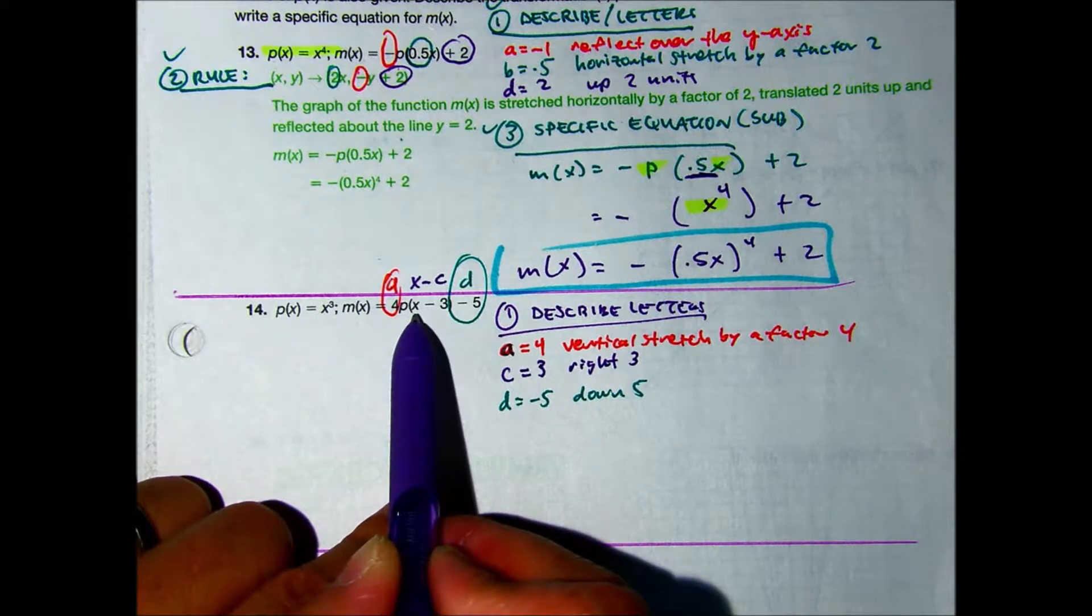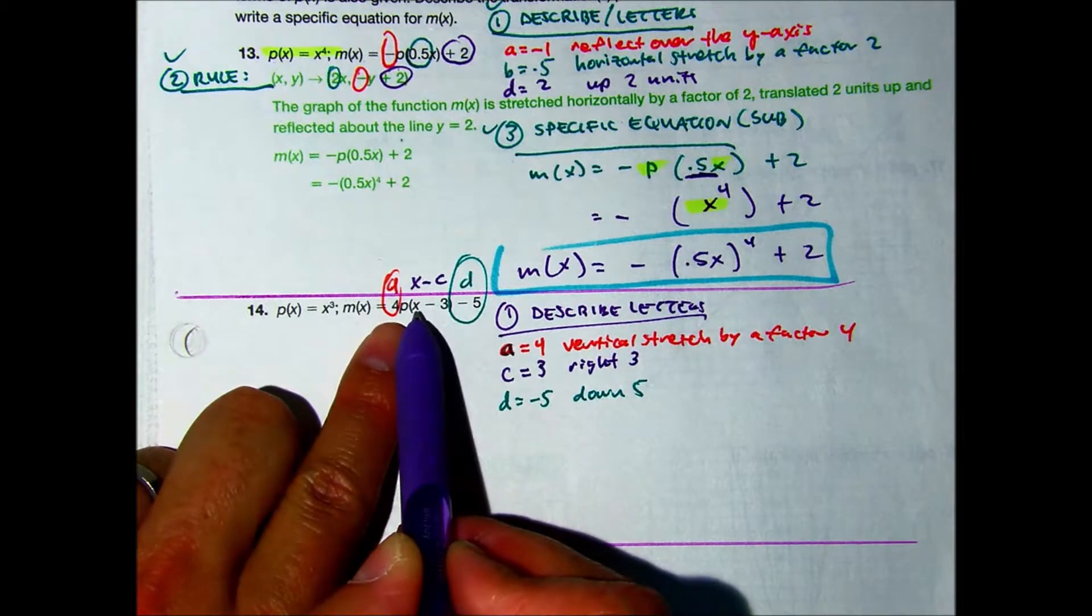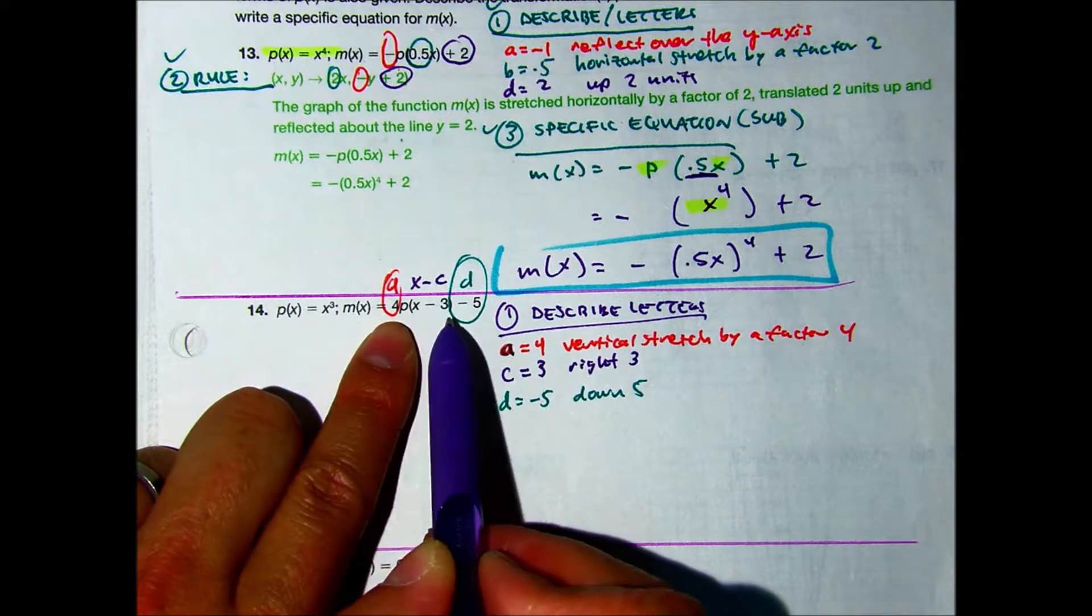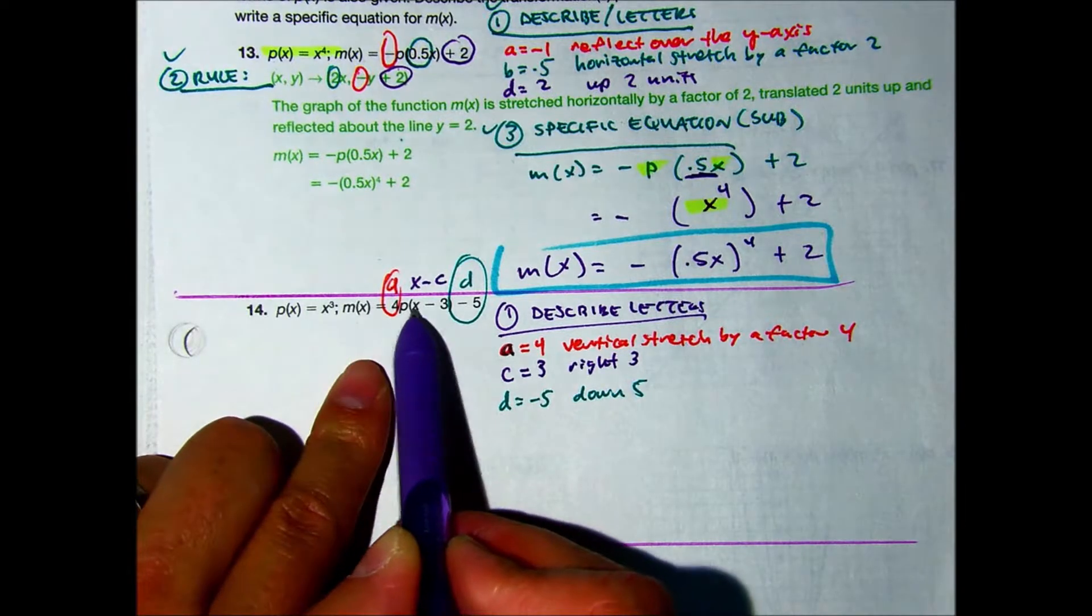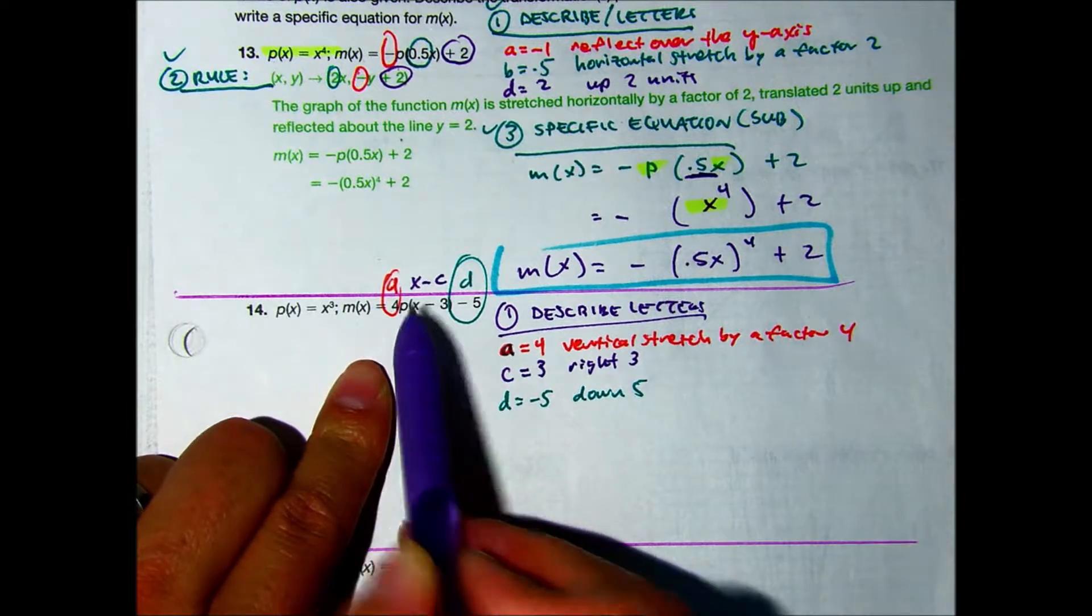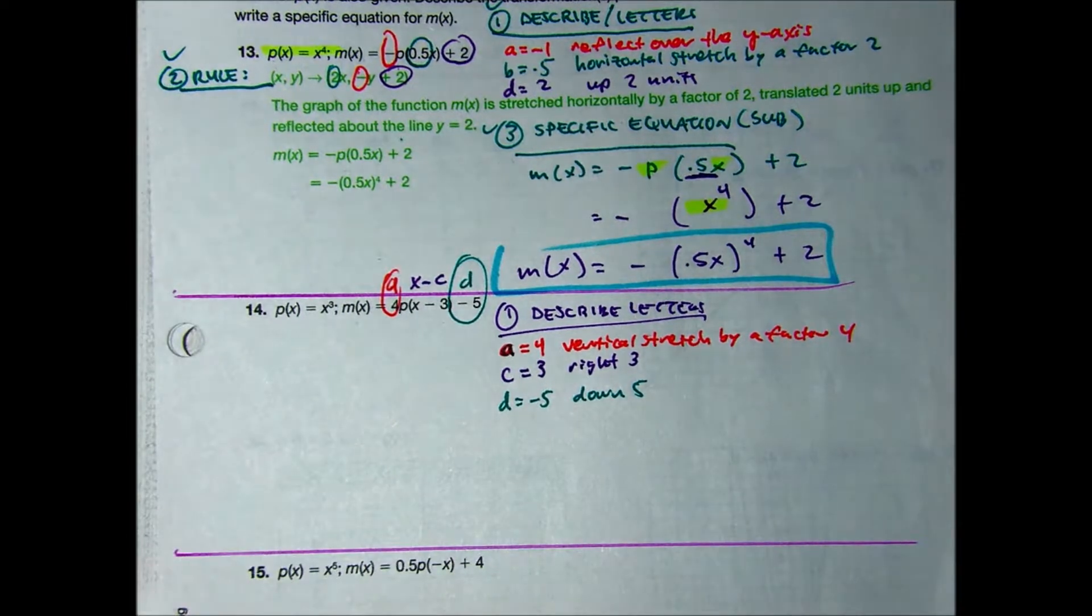The difference between the B and the C is the C is to the right. Everyone say right. Inside the parentheses is to the right of the X. If you see anything to the left, that would be the letter B. Okay, we just did describe the letters. Okay.